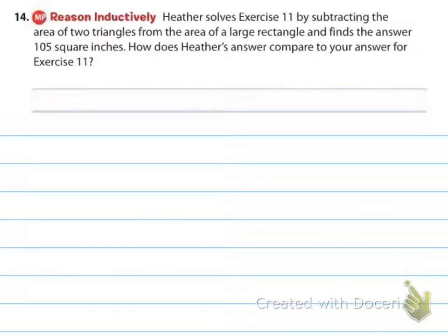Number 14, Heather solves exercise 11 by subtracting the area of two triangles from the area of a large rectangle and finds the answer 105 square inches. How does Heather's answer compare to your answer from exercise 11?